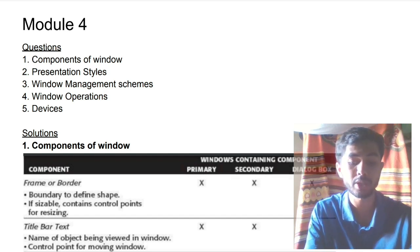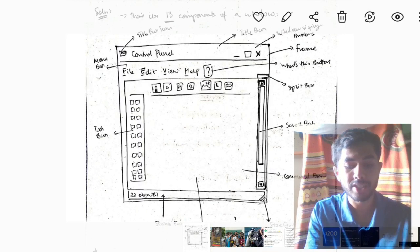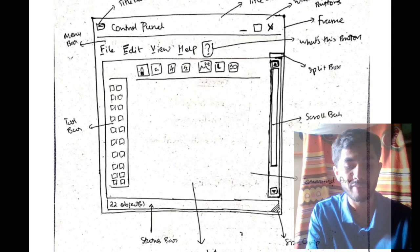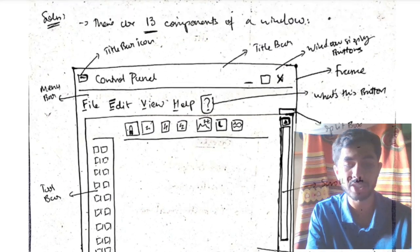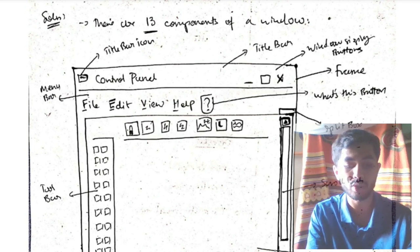So without wasting any more time, let's start with our first super important question which is components of windows. For the components of windows, you just have to remember a very simple diagram which is this diagram. This diagram is also there in my theory video I have explained that. So what you have to just remember is the normal presentation of how a window looks like and what all you can find here.